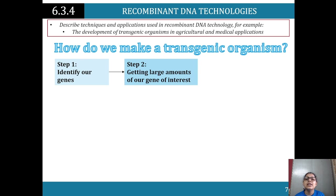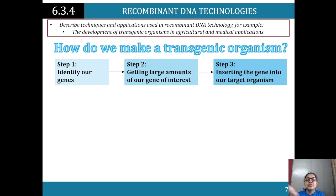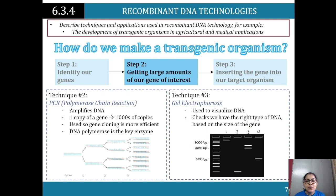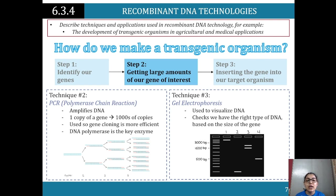To make a transgenic organism: first, identify the genes of interest using gene sequencing to gather single nucleotide information, then order the gene fragments to insert into other organisms. Step two - use PCR (polymerase chain reaction) to amplify the DNA so one copy becomes thousands of copies, making gene cloning more efficient. Step three - gel electrophoresis is used to visualize the DNA and verify you have the correct type needed before proceeding.